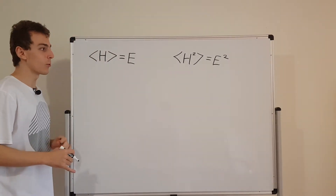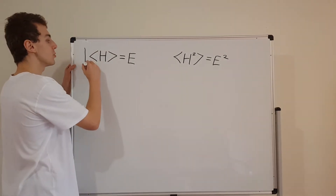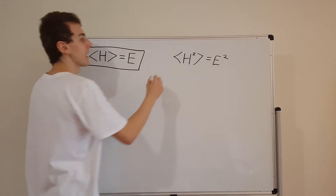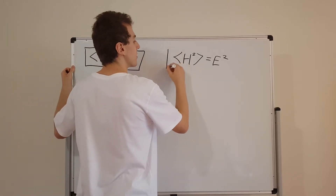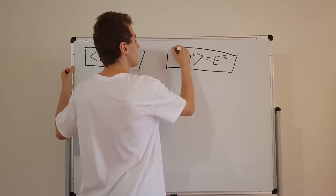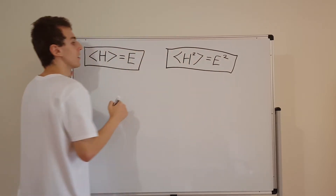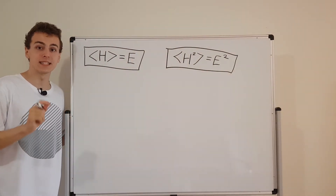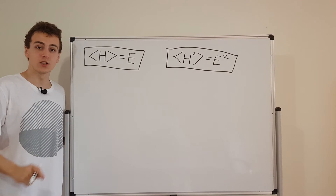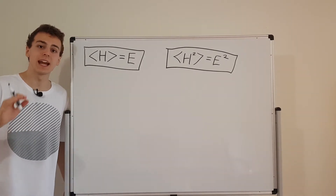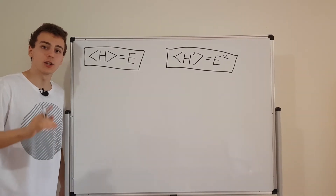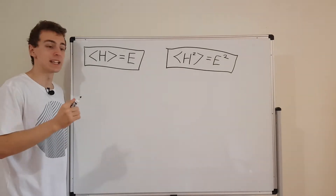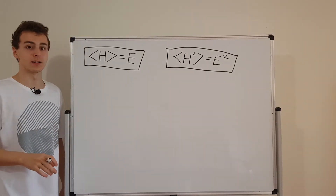So what I want to do is take these two useful facts, combine them together, and find the variance of the Hamiltonian specifically for a stationary state. This is actually called a state of definite energy, and I'll explain why it's called that in a second, after we calculate the variance.